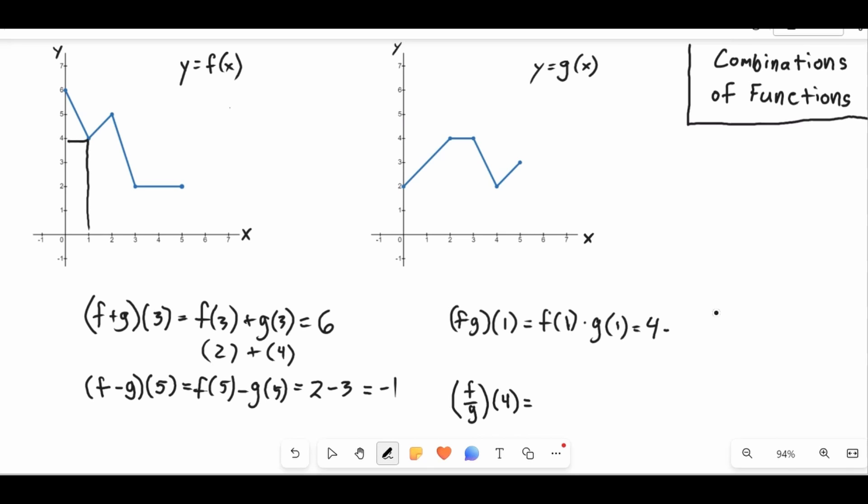So it's 4 times g(1), so go to the g graph, here's 1, and it goes up right about here, we'll go over, and it looks like it's 3. So this is 4 times 3, and so f times g of 1 is going to be 4 times 3, which is 12.